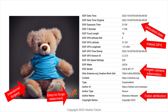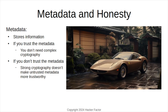This AI-generated forgery includes fake metadata. Any solution that only evaluates metadata will incorrectly report the camera, time, location, and attribution information. Metadata stores information, but it doesn't say where it came from.